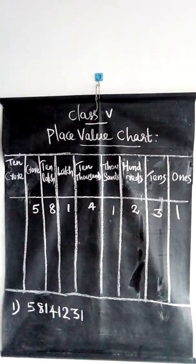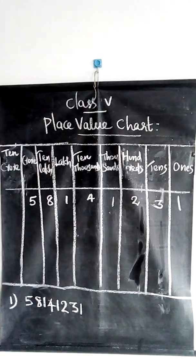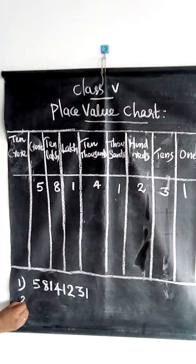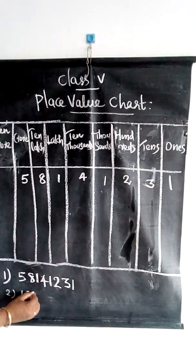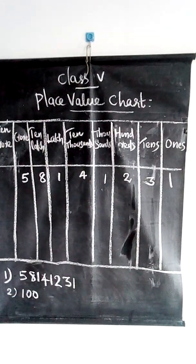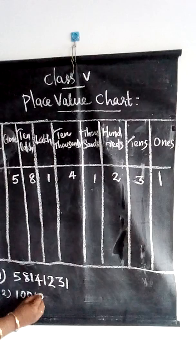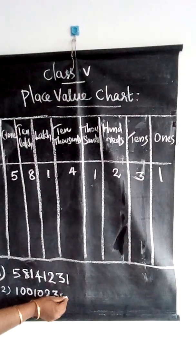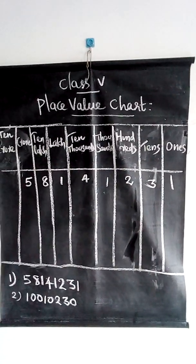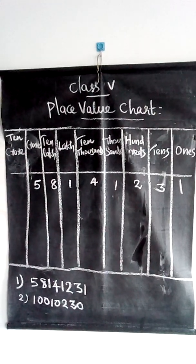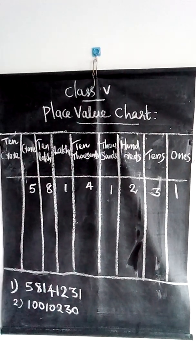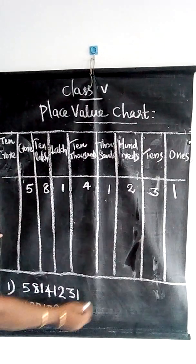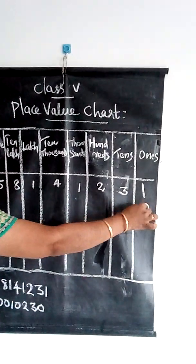Let's take another example. This is also a large number. How do we mark this in the place value chart? In the ones place it is 0, so we mark 0 here.